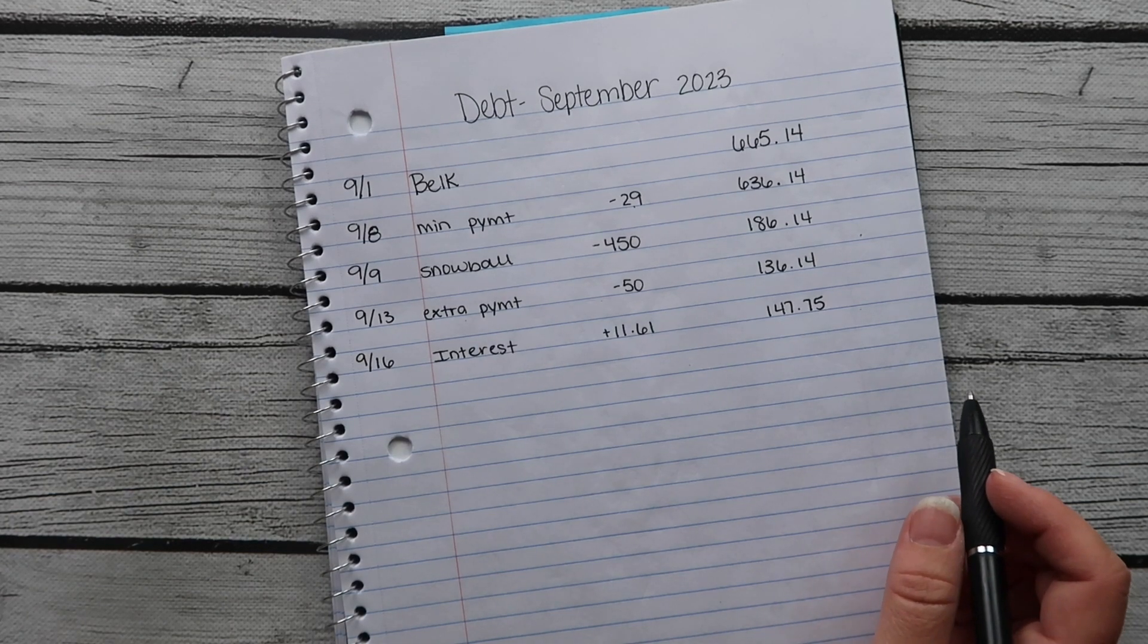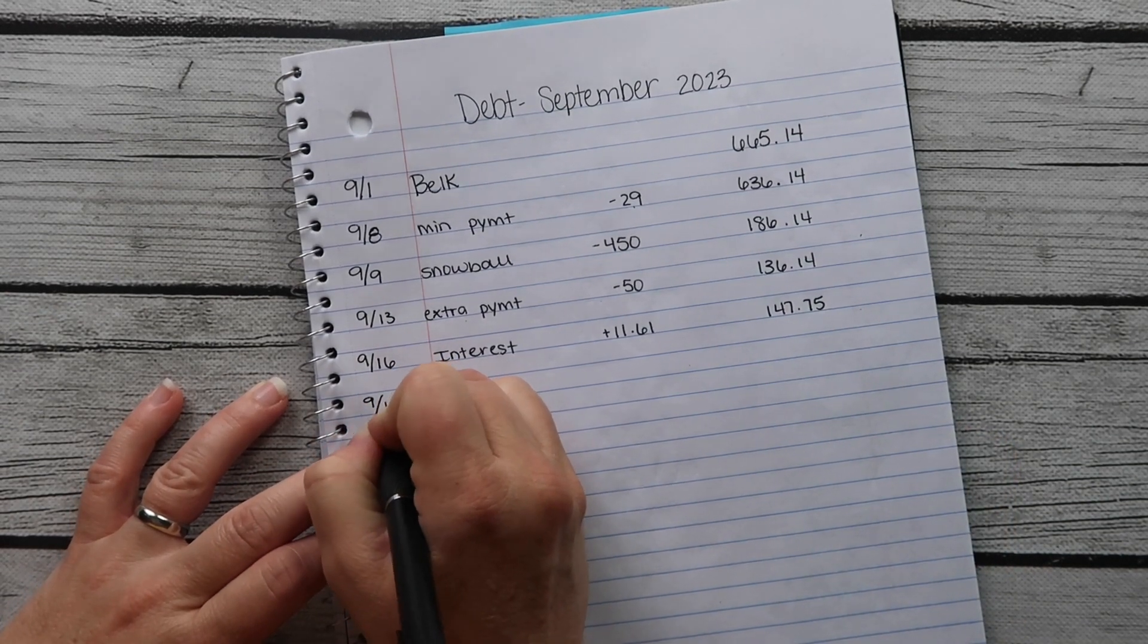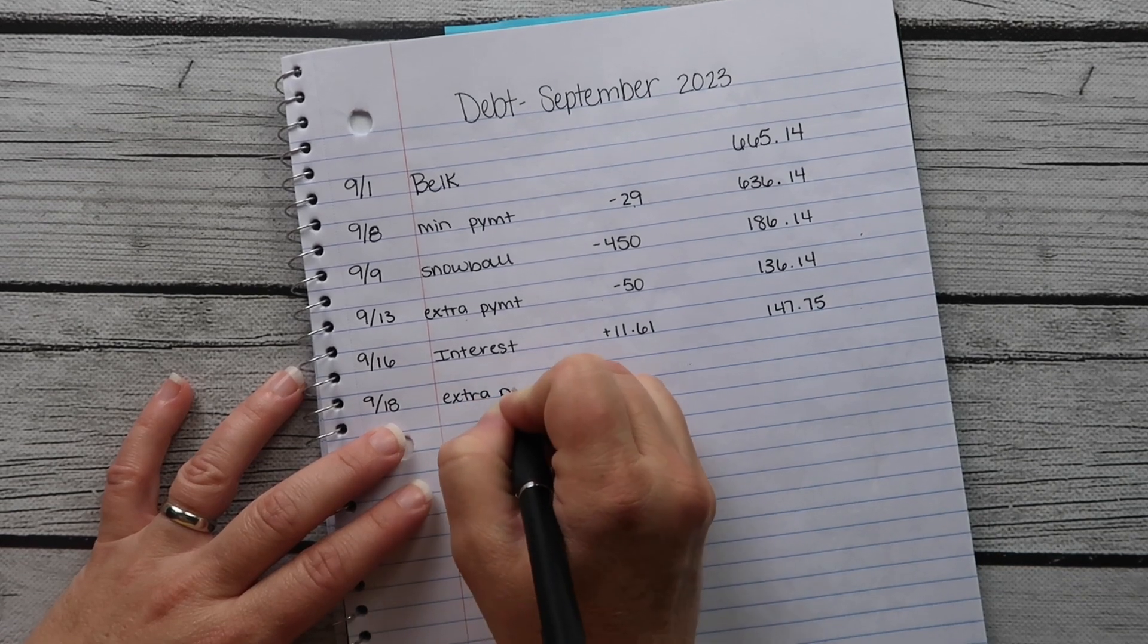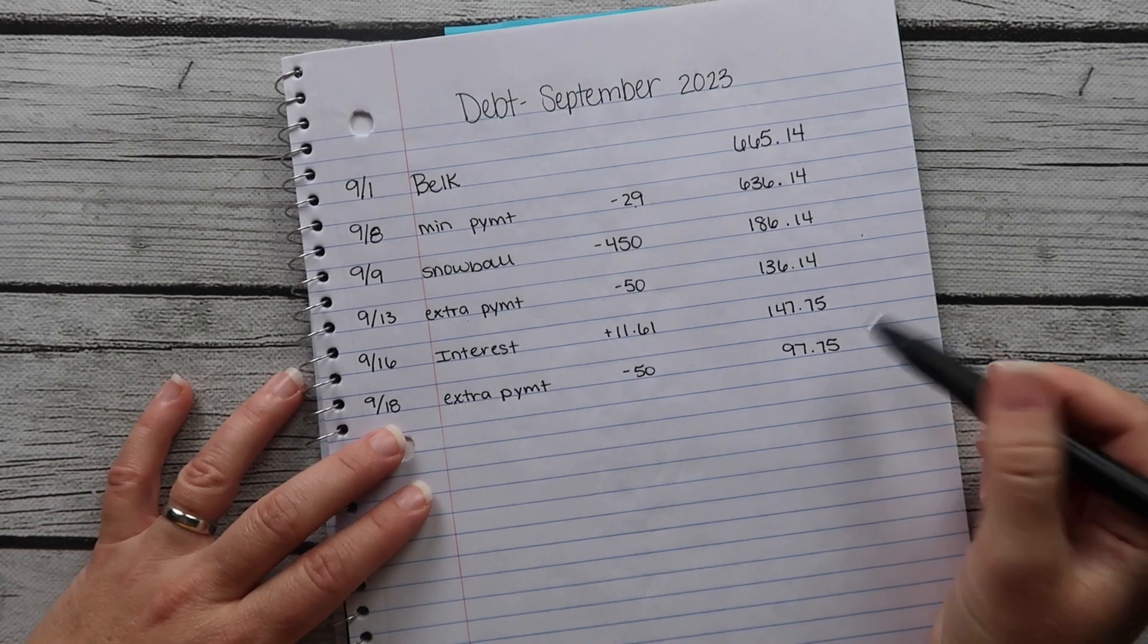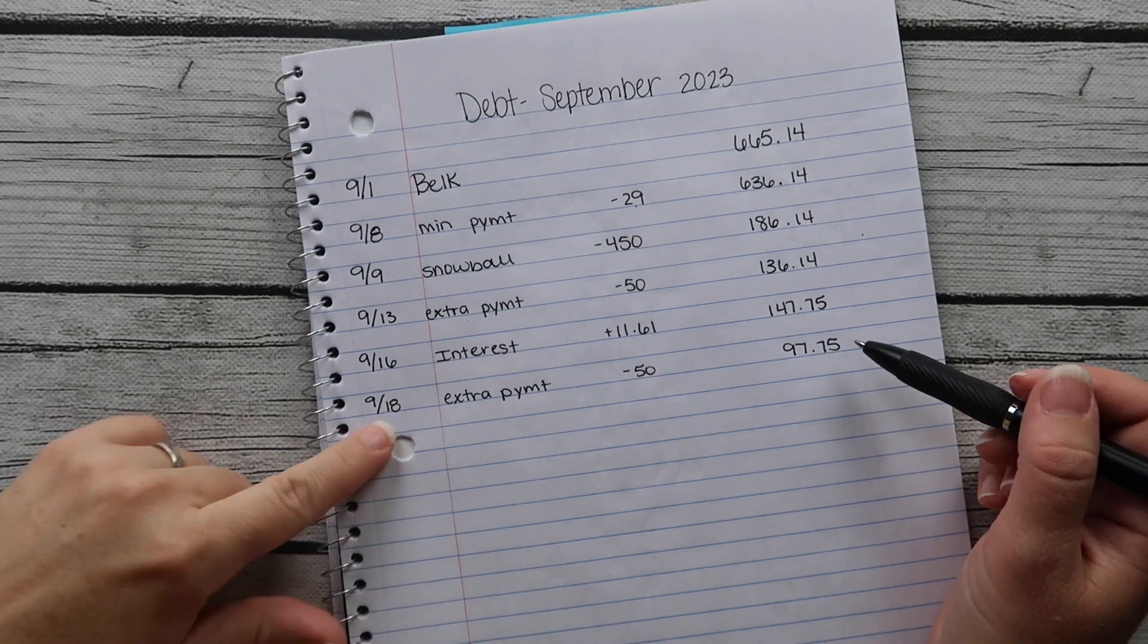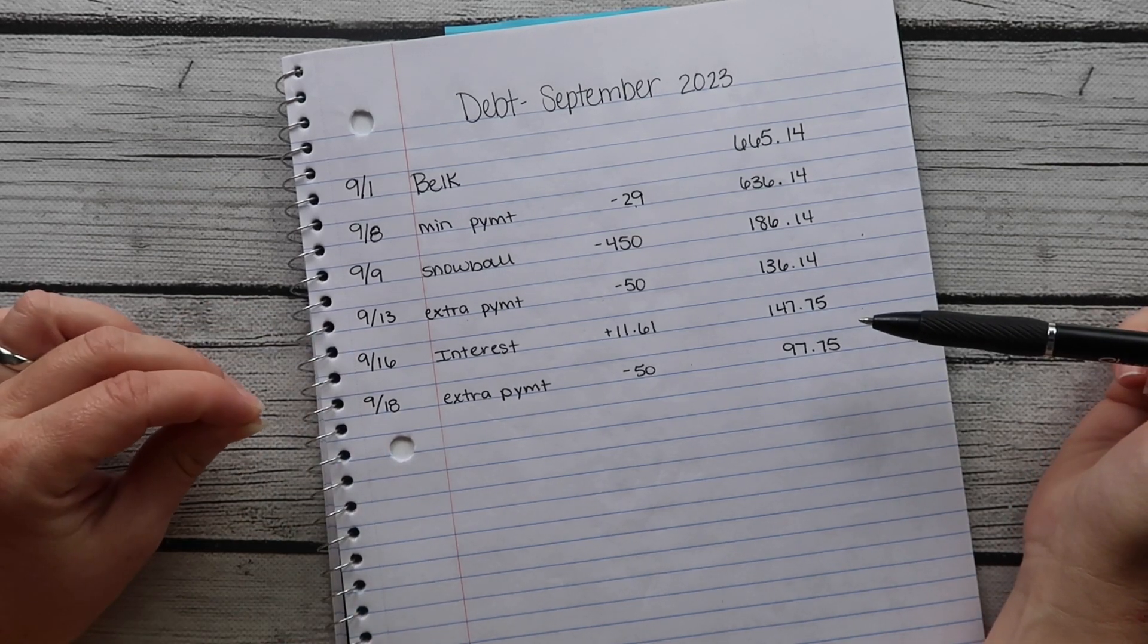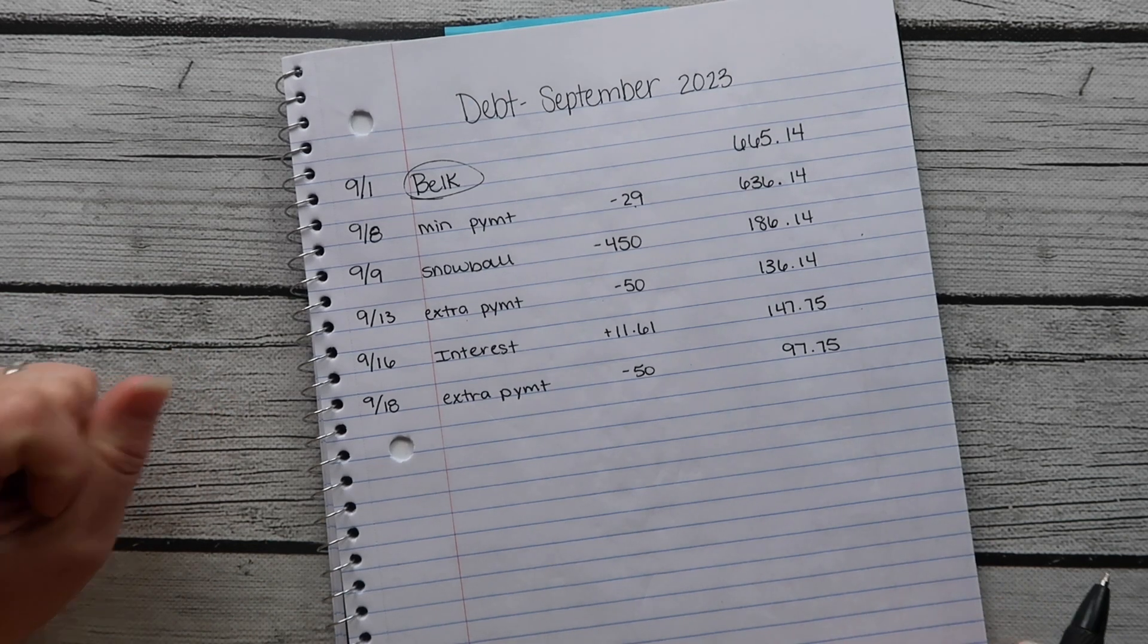I sold $160 some dollars worth of stuff so I'm going to go ahead and put that in. I'm filming this on the 17th. An extra payment will go on tomorrow for $50 which will bring that down to $97.75. My goal is to have this paid off by the end of the month. Technically the payment will go on the first Monday in October but it will be from money made in September. Hopefully the goal is this card will be paid off at the end of September.